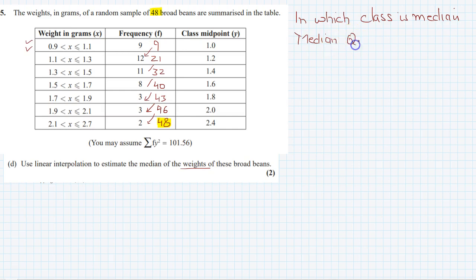Where it lies? It lies in the mid value, so that is 48 over 2, that is the 24th value. Now up to 9 values are here, up to 21 values are here, so from 21 to 32 is here. So median is lying in this class interval.